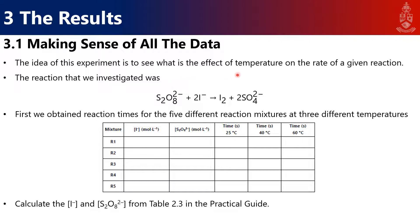In this experiment, we want to see what the effect of temperature was on the rate of a given reaction. But remember, temperature is really the only variable that influences the rate of any reaction. And specifically, the reaction that we're looking at is that of persulfate with iodine ions to form iodide and sulfate ions.